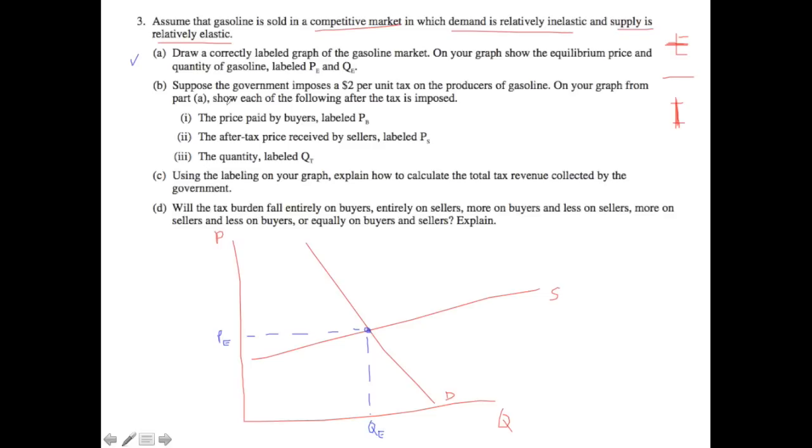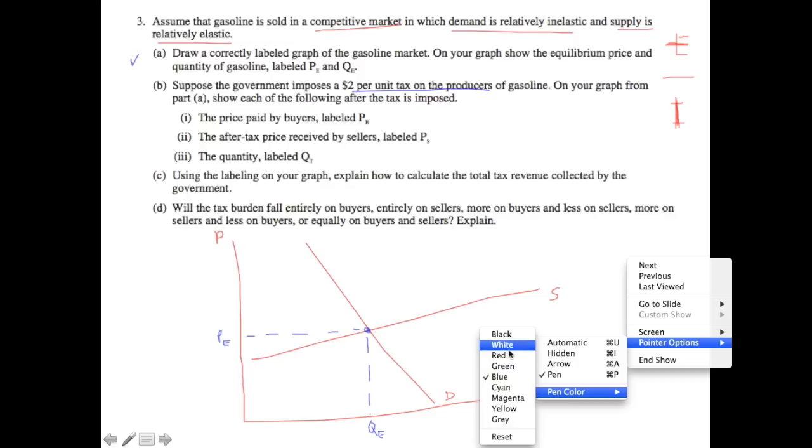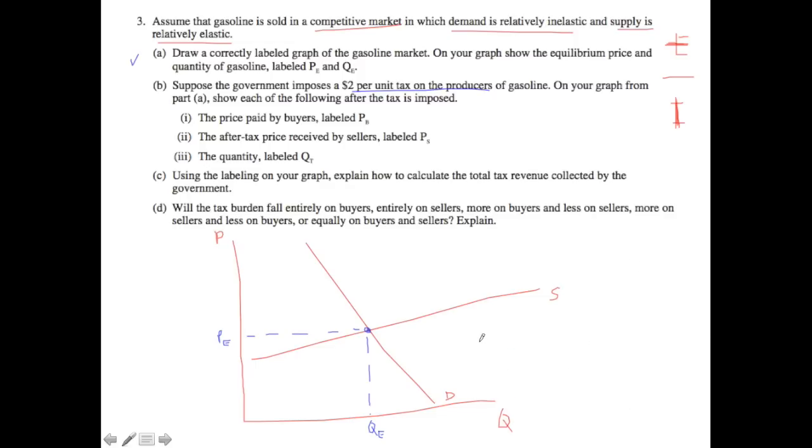All right, so that is part one. Let's look at part B. Suppose the government imposes a $2 per unit tax on producers of gasoline on your graph. Show each of the following after the tax is imposed. So a tax on producers, that means that we are going to be moving the supply curve up. Now if this were a tax on workers, then we would be moving the demand curve down. And the idea here is pretty intuitive. What you are doing is you are making the supplier have to incur an additional cost of a tax now. And so your supply curve is going to move up.